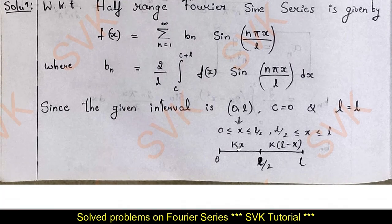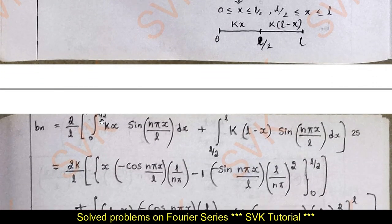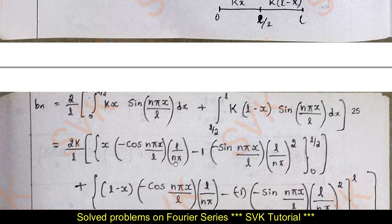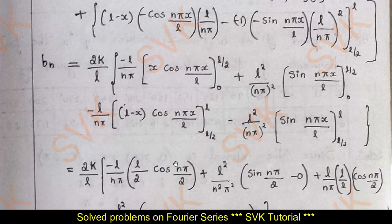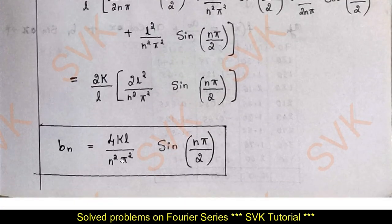In [0, l/2] f(x) = kx, and in [l/2, l] f(x) = k(l − x). Substituting under the integral: bₙ = (2/l) [∫₀^{l/2} kx sin(nπx/l) dx + ∫_{l/2}^{l} k(l − x) sin(nπx/l) dx]. Applying Bernoulli's rule and simplifying with respect to the limits, we get bₙ = 4kl/(n²π²) · sin(nπ/2).